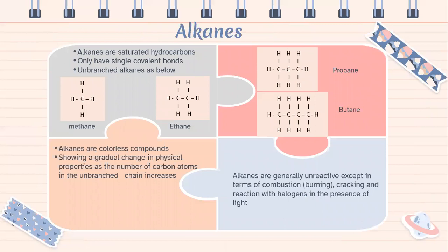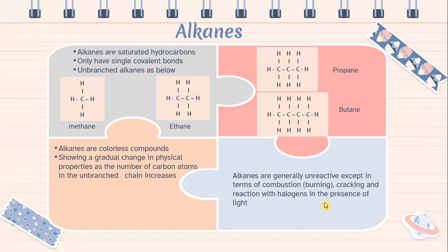Alkanes are saturated hydrocarbons that only have single covalent bonds. Examples include methane, ethane, propane, and butane. Alkanes are colorless compounds showing a gradual change in physical properties as the number of carbon atoms in the unbranched chain increases. Alkanes are generally unreactive except in terms of combustion, burning, cracking, and reaction with halogens in the presence of light.